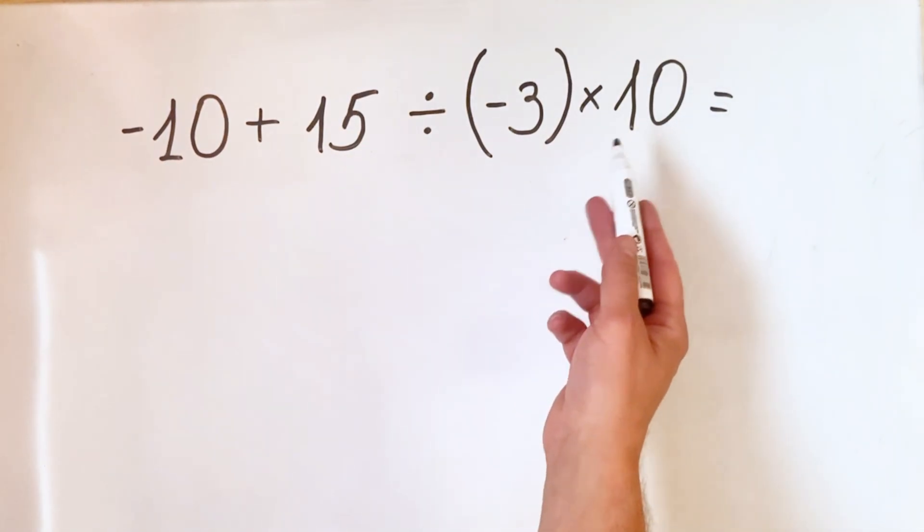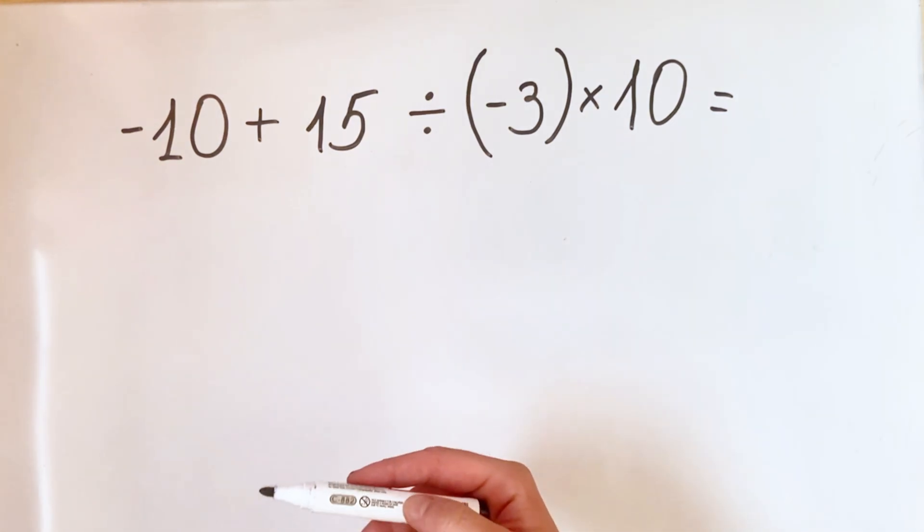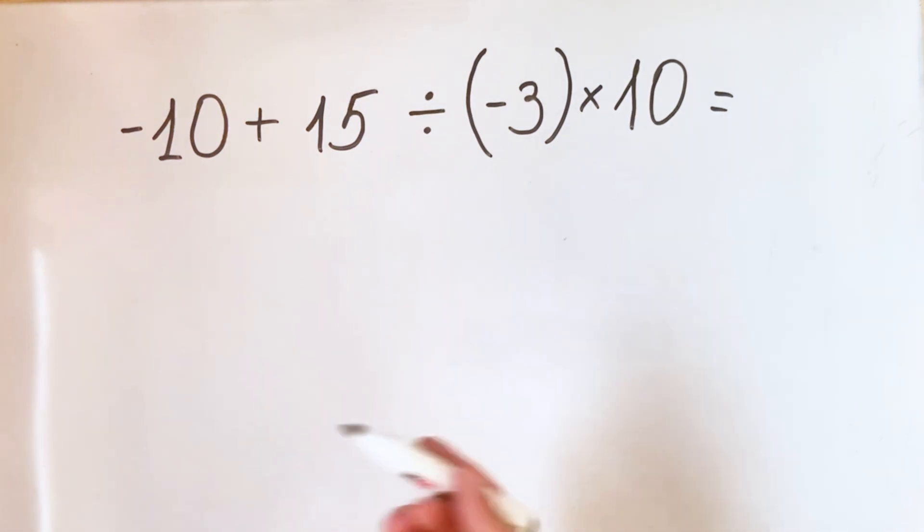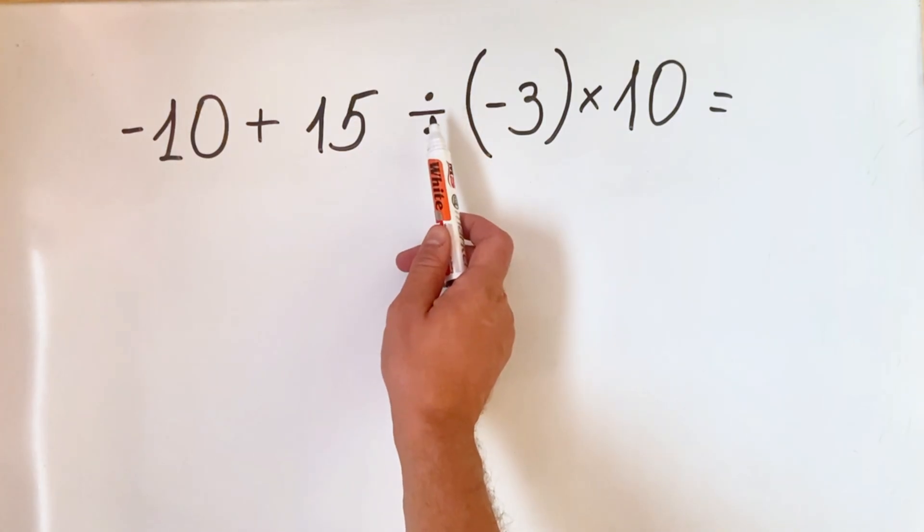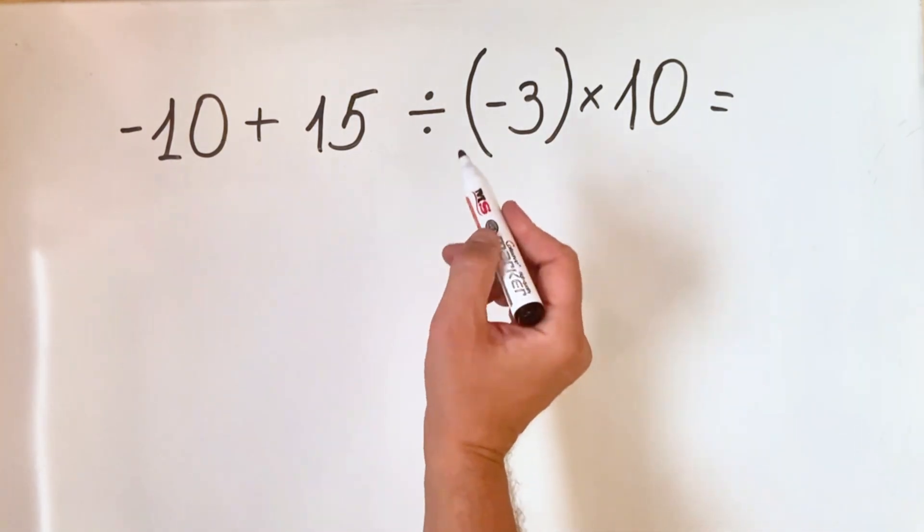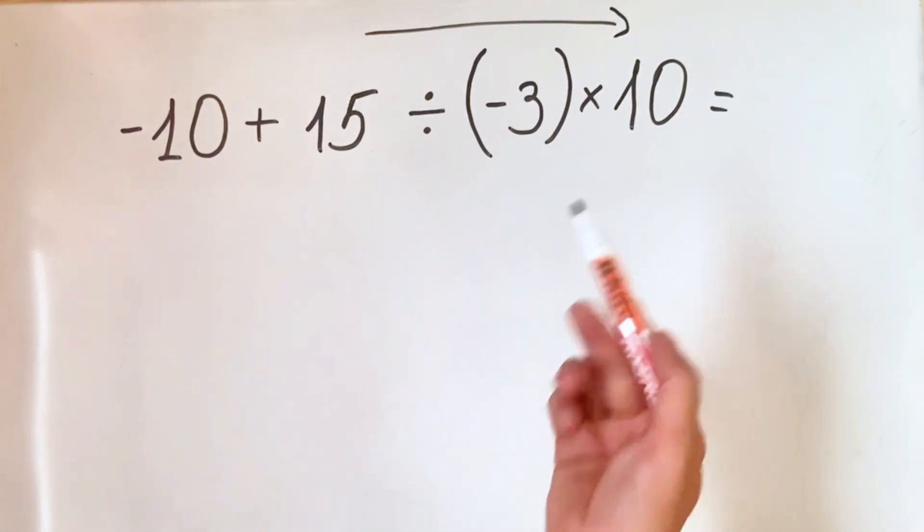When checking this type of equation, of course we must interpret first of all the order of operations, because we have division, we have multiplication, and we have addition. Of course, what we know is multiplication and division have priority over addition and subtraction. In this way, we must do it from left to right.